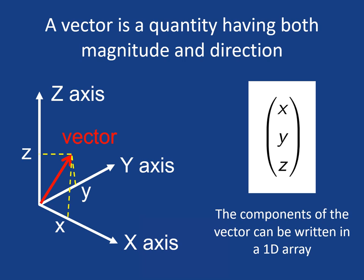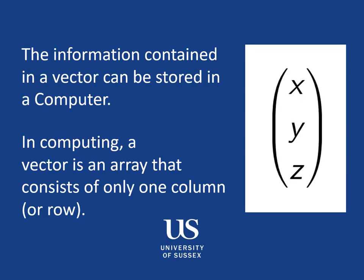So a vector is a quantity having both magnitude and direction. And the components of the vector can be written in this sort of one dimensional array. So the information can easily be stored in the computer. In computing a vector is an array that consists of only one column or only one row of information. And unlike the example of the bicycle which just has x, y, and z velocity components, in principle in computing or in physics you might have a vector that has many many elements or many many numbers in it.